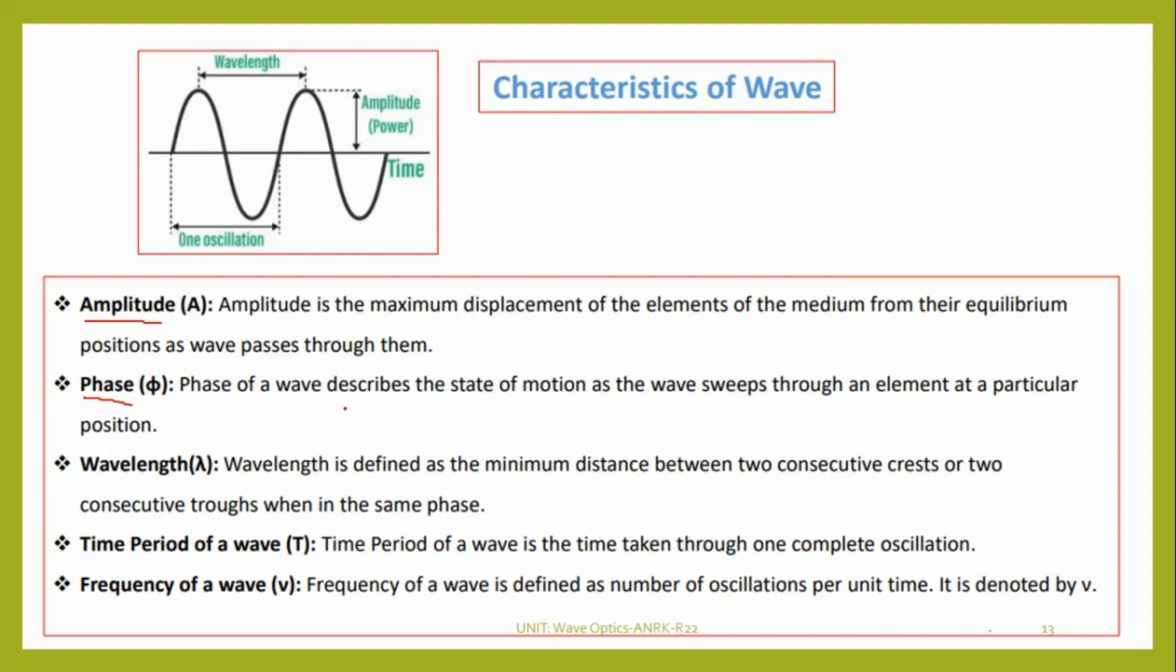Then phase. Phase of the wave describes the state of motion as the wave sweeps through an element at a particular position. Wavelength is nothing but the distance between two consecutive crests or troughs. This may be lambda.